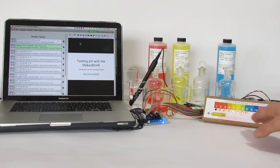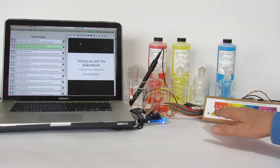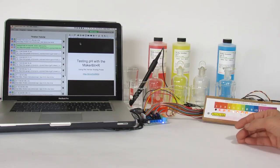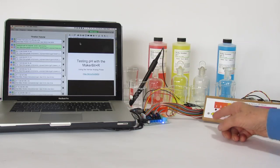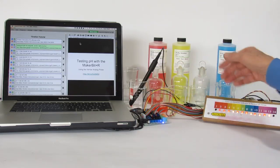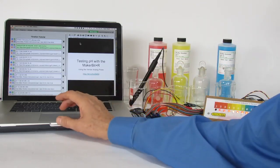Over here we've got a little display set up with LEDs. The MakerBit can control those, and as the pH changes those lights will indicate the pH as well.